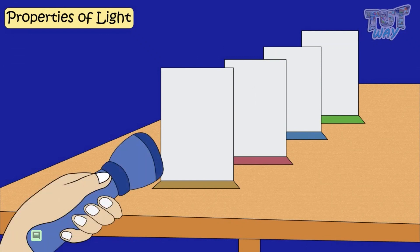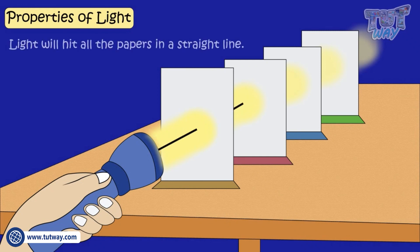And now flash the light on the first paper using the torch. What do you find? The light will hit all papers in a straight line. So it shows that light travels in a straight line.